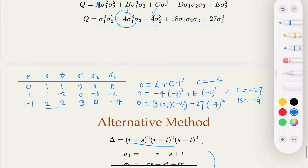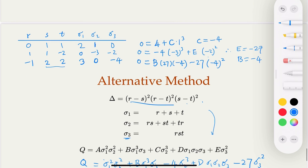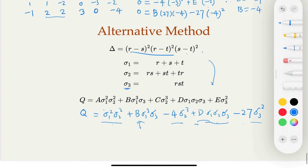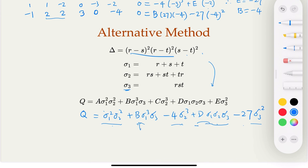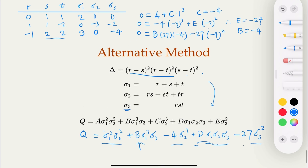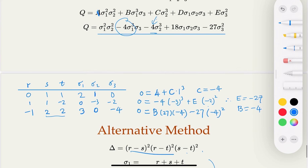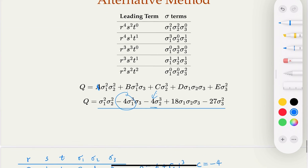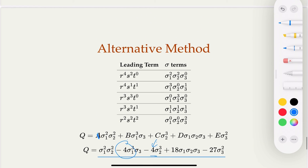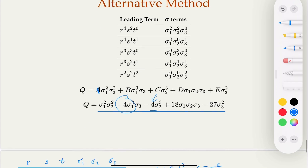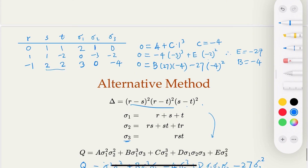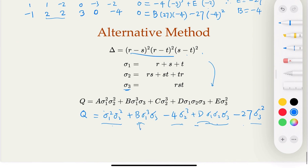That's it. We used two different methods to find the polynomial for the discriminant of a cubic equation. Thank you.